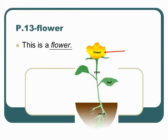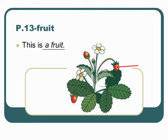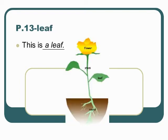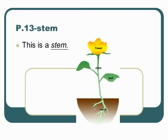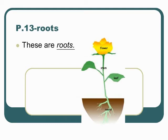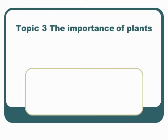Flower: This is a flower. Page 13. Fruit: This is a fruit. Page 13. Leaf: This is a leaf. Page 13. Stem: This is a stem. Page 13. Roots: These are roots.